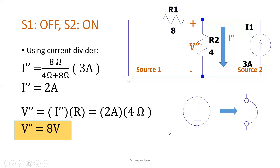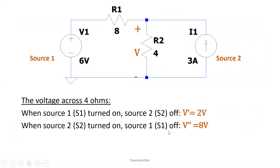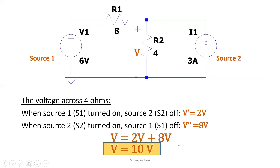We're not yet done — let's have a summary. The voltage across 4 ohms when source 1 is on and source 2 is off: V prime equals 2 volts. When source 2 is on and source 1 is off: V double prime equals 8 volts. Adding them up, 2 plus 8 equals 10 volts. That's how you use superposition.